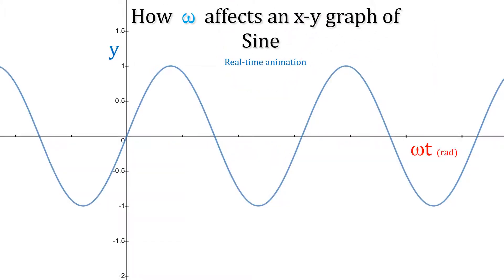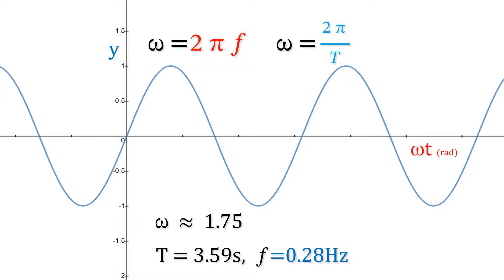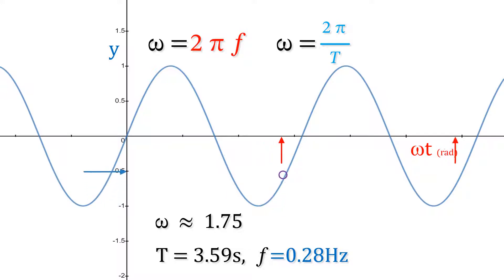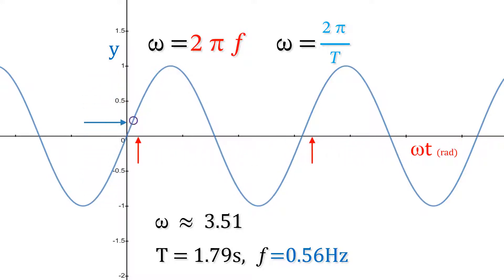How omega affects an x-y graph: in this example, we've got a period of about three and a half seconds, so the frequency is one divided by that — 0.28 cycles per second for this particular waveform. The two top equations show you how to work out omega. Then we change the frequency, which changes omega. The higher the frequency, the bigger omega is, and the faster the unit circle spins.